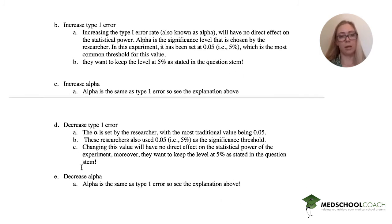And then again, decreasing type 1 error is the same thing as decreasing alpha. You could have taken out all of these four choices.